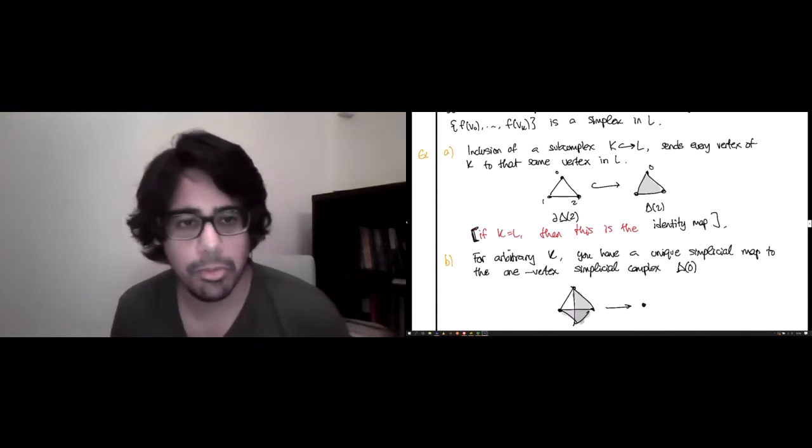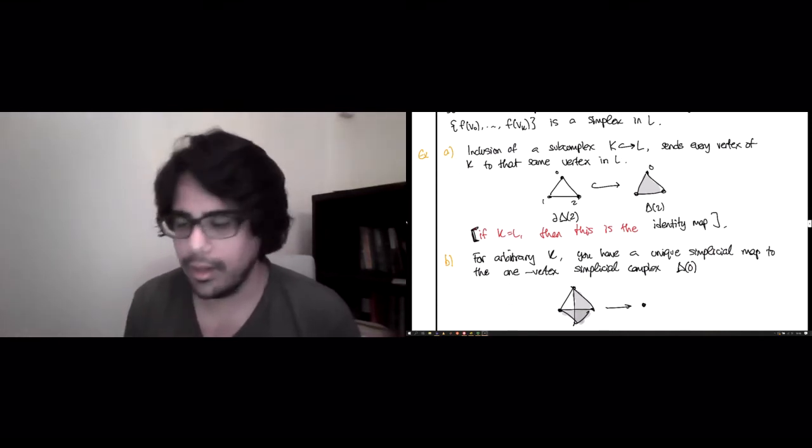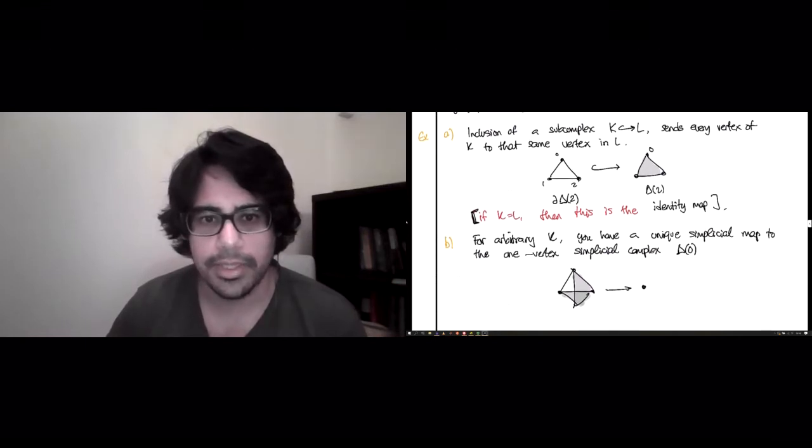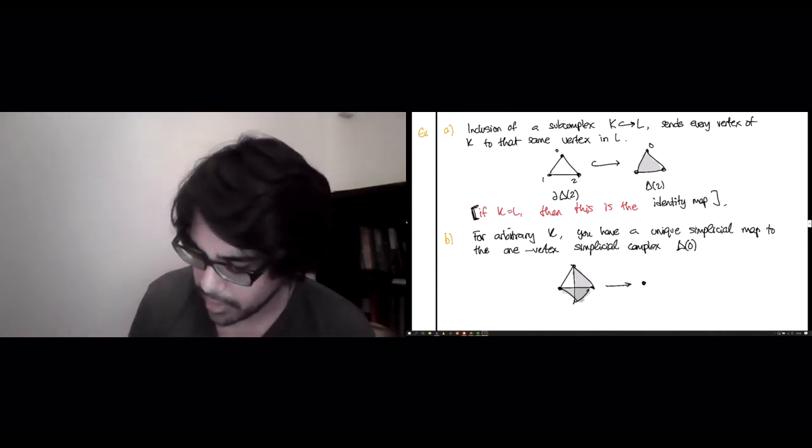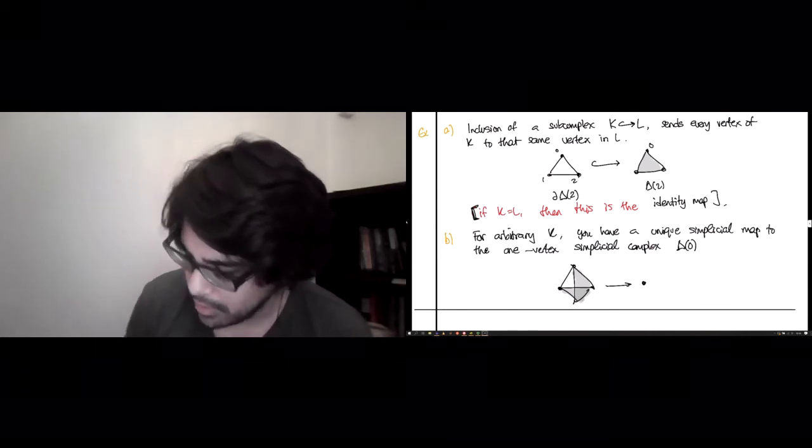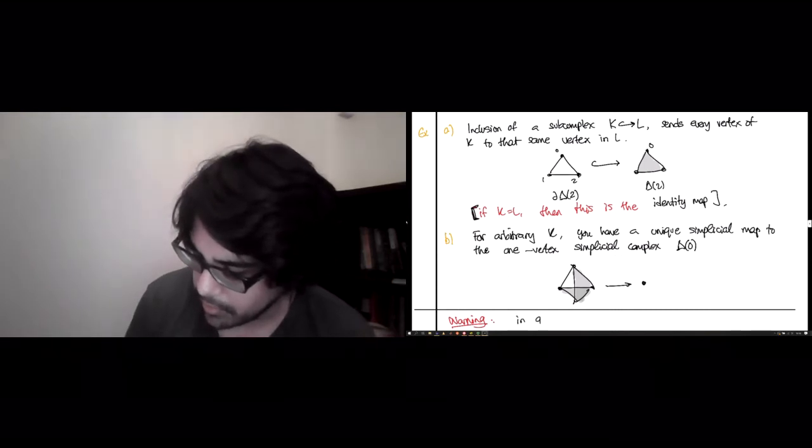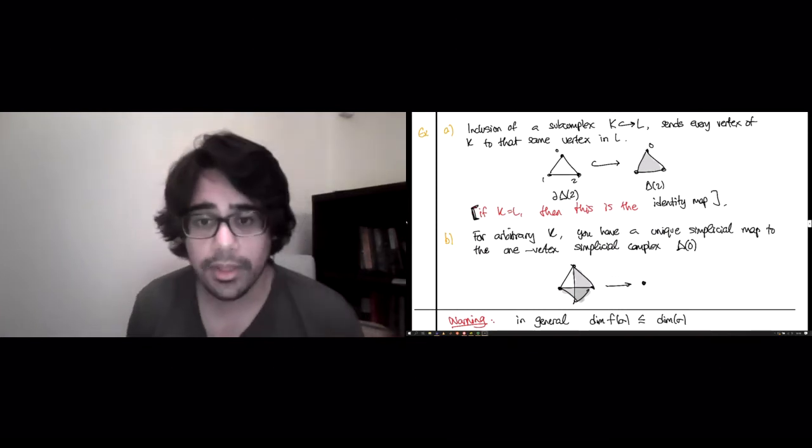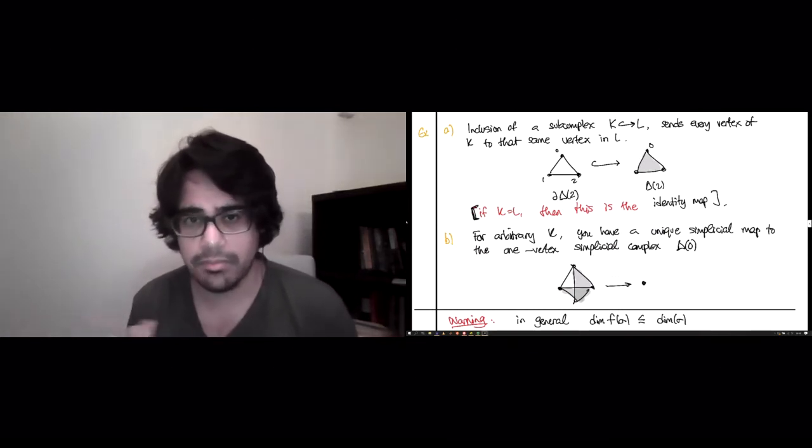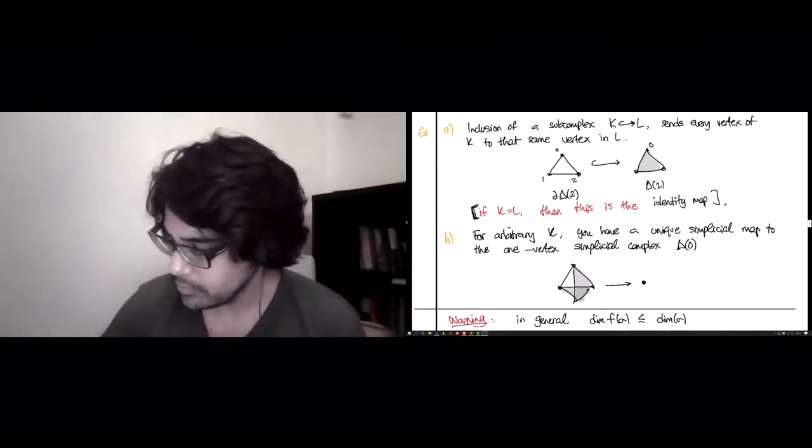So if you're used to graph homomorphisms that are strictly required to send edges to edges, you note that this is not going to be that sort of rigid. It allows you to squish all sorts of simplices down to things of smaller size. So the warning in all of this, to keep in mind, is that in general, the dimension of the image simplex F of sigma is less than or equal to the dimension of sigma, and equality is not a guarantee. This dimension is measuring the failure of injectivity of F when restricted to the vertices of sigma.